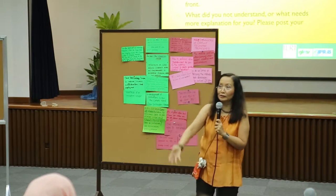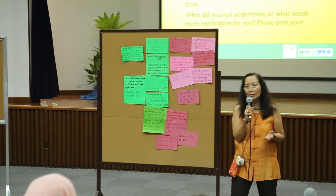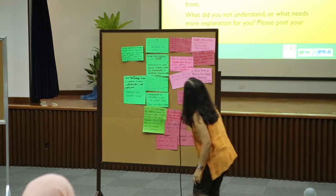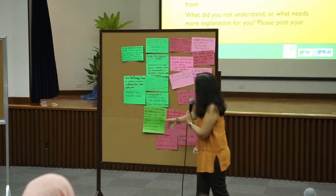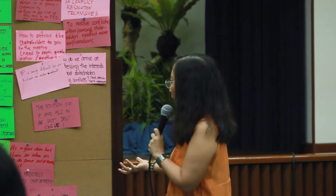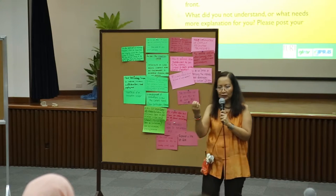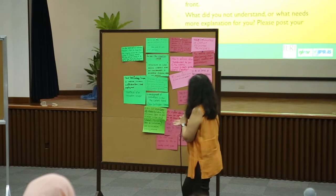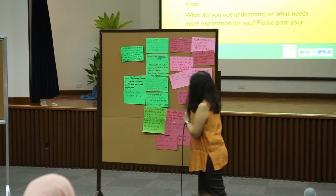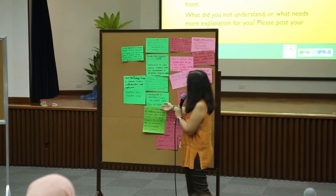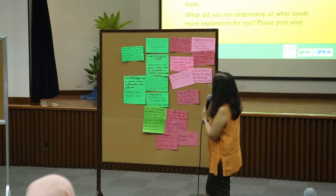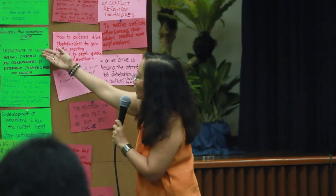In other words, the social, cultural — a sociocultural system, as Ido described — even the historical background of that particular community matters. Another set of cards says the main realization is that the agricultural innovation system is not a single or linear process, but rather involves all stakeholders to discuss a particular issue and come up with a solution or common response. Co-development of innovations is now the current trend, with farmers, policymakers, market actors, and academia all interacting.